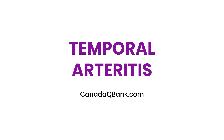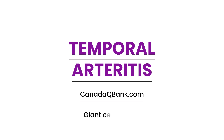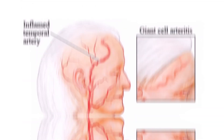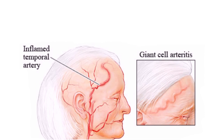In this video we're going to have a discussion about temporal arteritis, also known as giant cell arteritis. Here's a picture pointing to the temporal artery, which in this particular patient is inflamed. That's basically one of the arteries that can be inflamed in this condition. Other parts of the body containing arteries that can be inflamed in this disorder are not just in the temporal area.